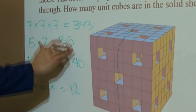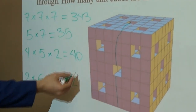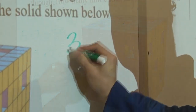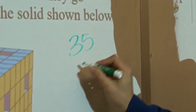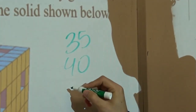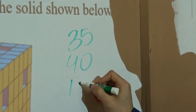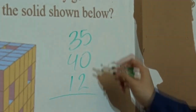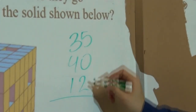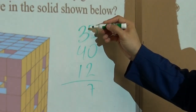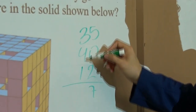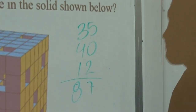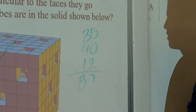Now we add this up: 35, 40, and 12. 35 plus 40 plus 12 gives us 87 unit cubes that are gone.